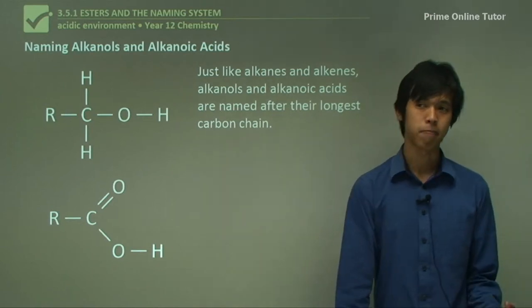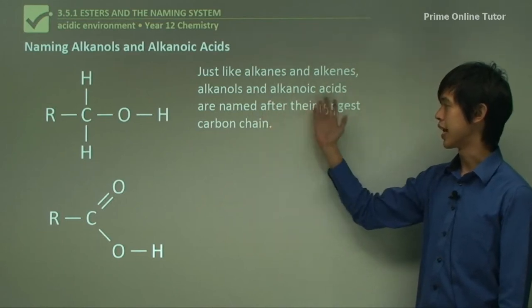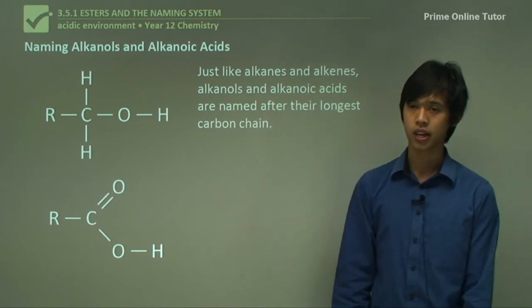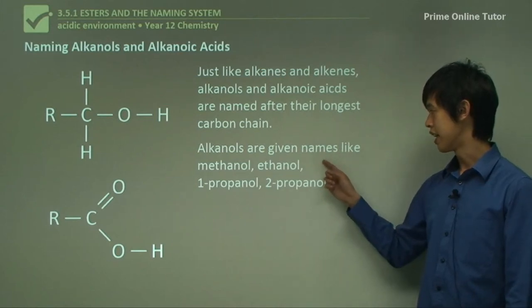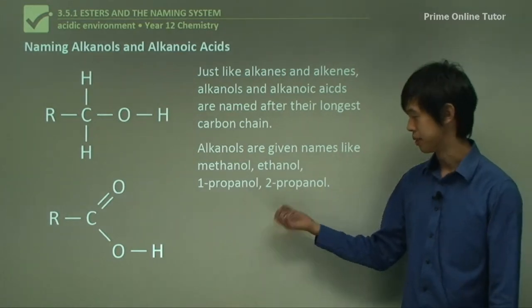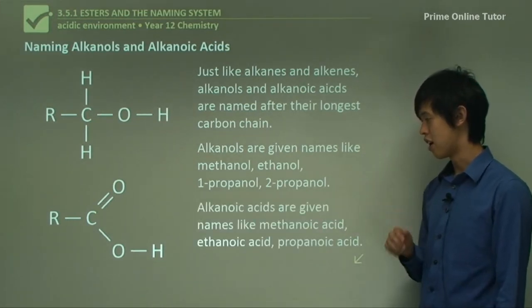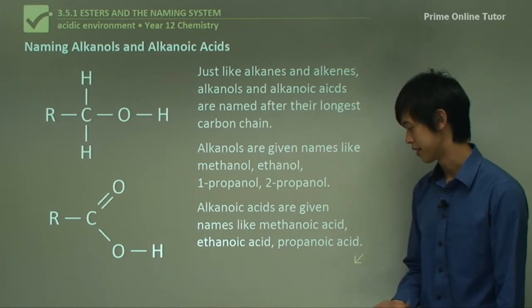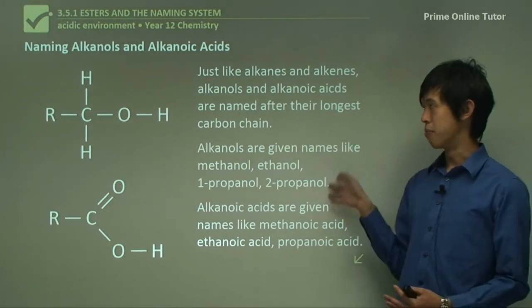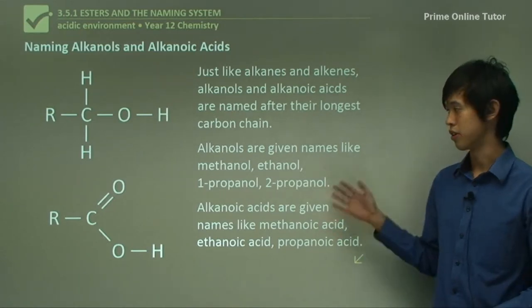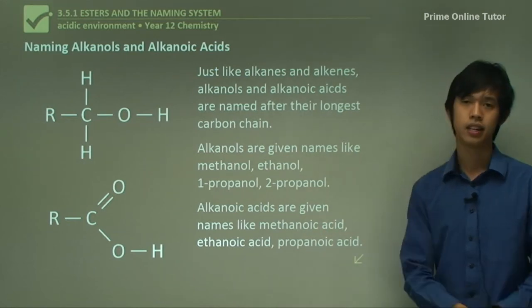What about naming them? How do we name these alkanols and alkanoic acids? Well, just like alkanes and alkenes, alkanols and alkanoic acids are named after their longest carbon chain. Take the longest chain, and that is the first part of your name. Alkanols are given names like methanol, ethanol, 1-propanol, 2-propanol, et cetera. And alkanoic acids are often given names like methanoic acid, ethanoic acid, and propanoic acid. We'll go in more depth about how to name them in future lessons, so don't worry too much yet, but the naming convention is pretty similar to how alkanes and alkenes work.